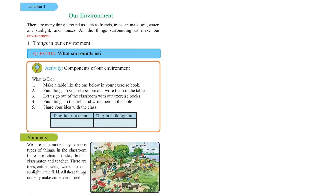In summary, we are surrounded by various types of things. In the classroom there are chairs, desks, books, classmates, and teachers. In the field there are trees, cattle, soil, water, air, and sunlight. All these things together make our environment. If you look at the picture, you can see houses, trees, people walking on the road, cattle grazing, people cutting agricultural items, a river with a boat, the sun, birds flying, and flowers blooming — everything is part of the environment.